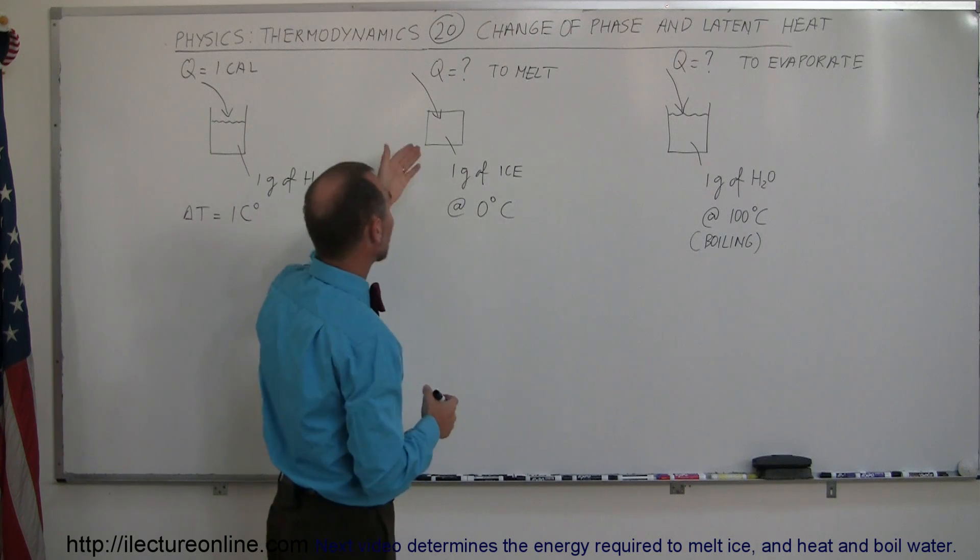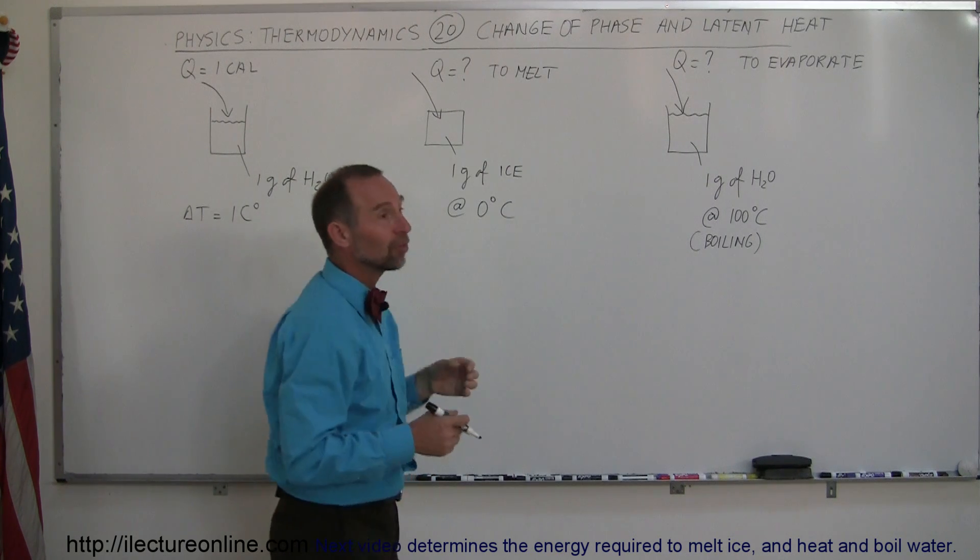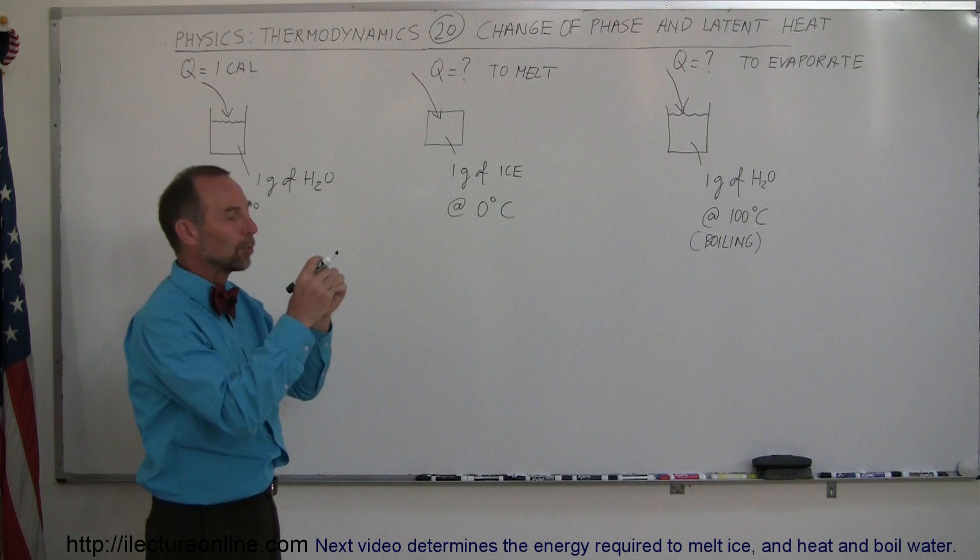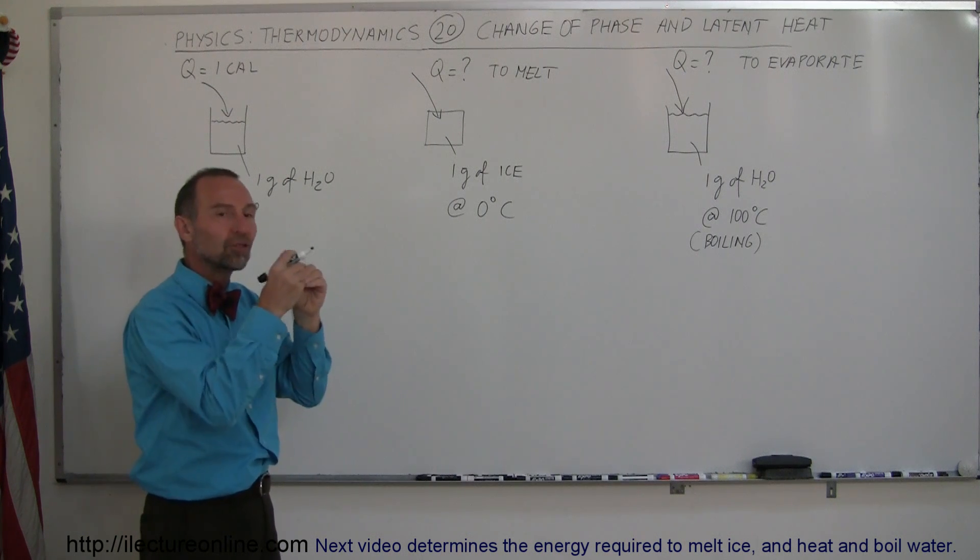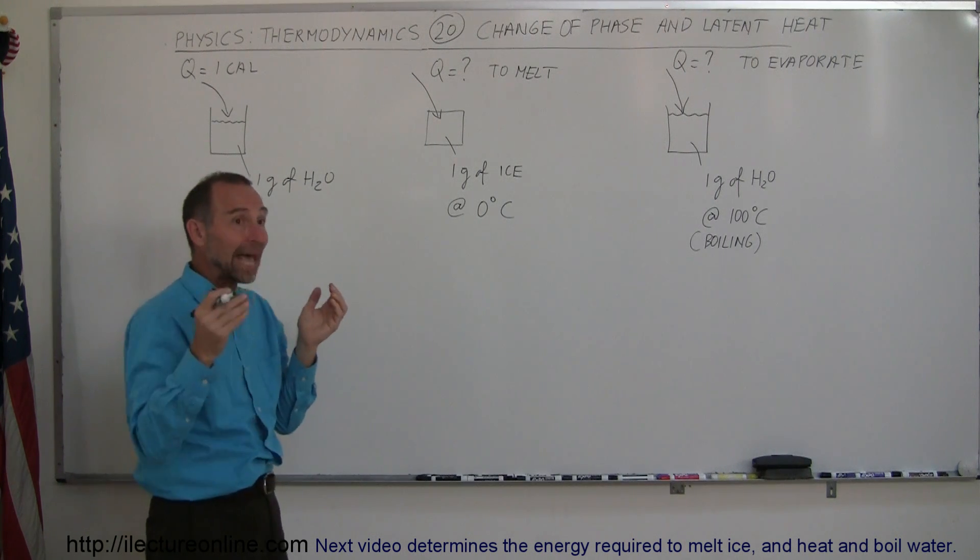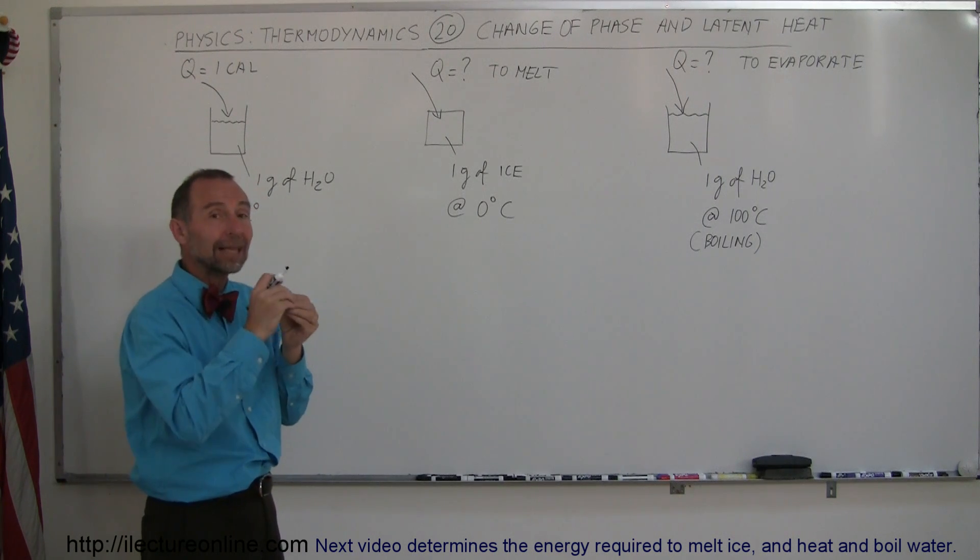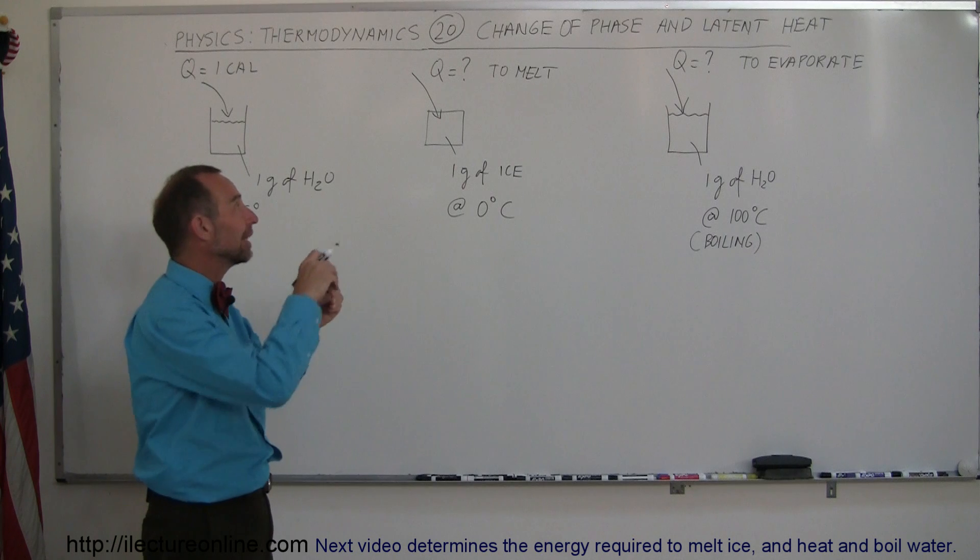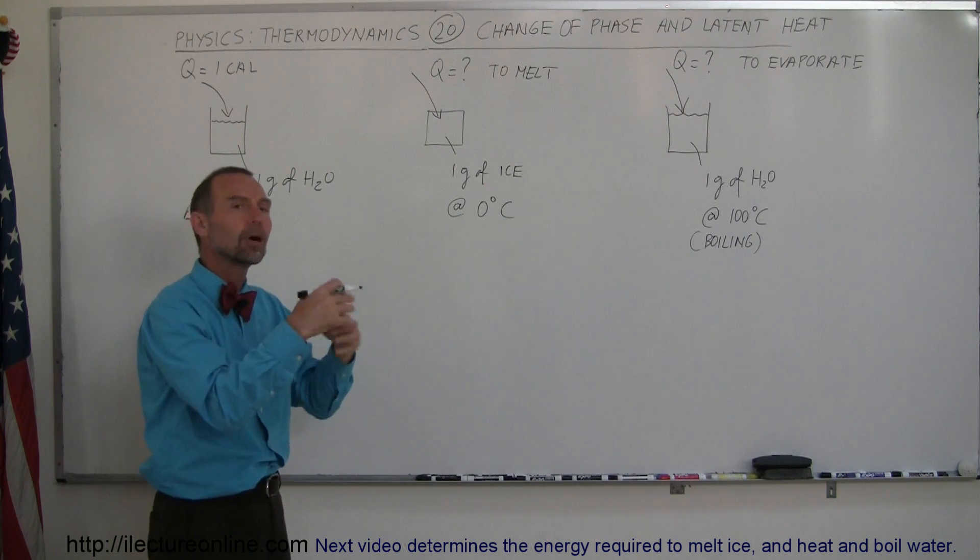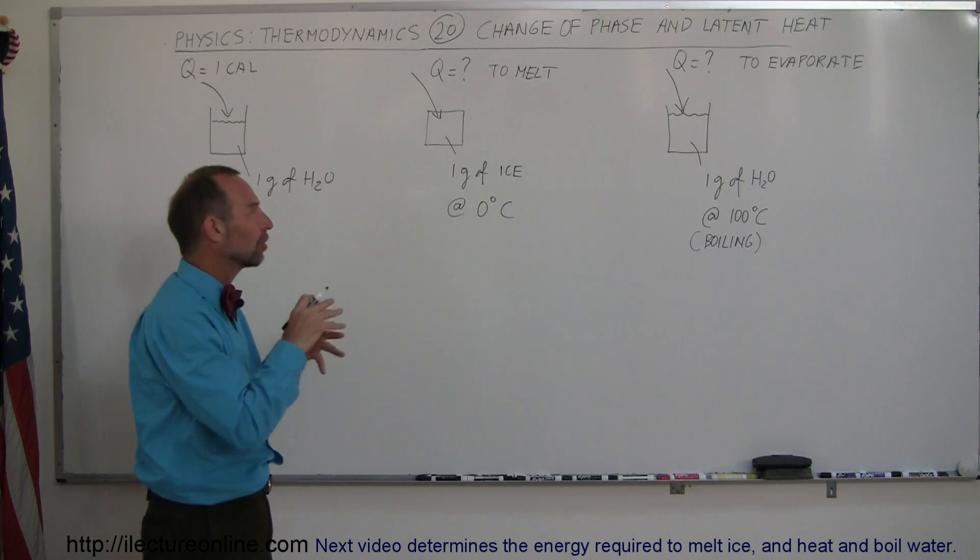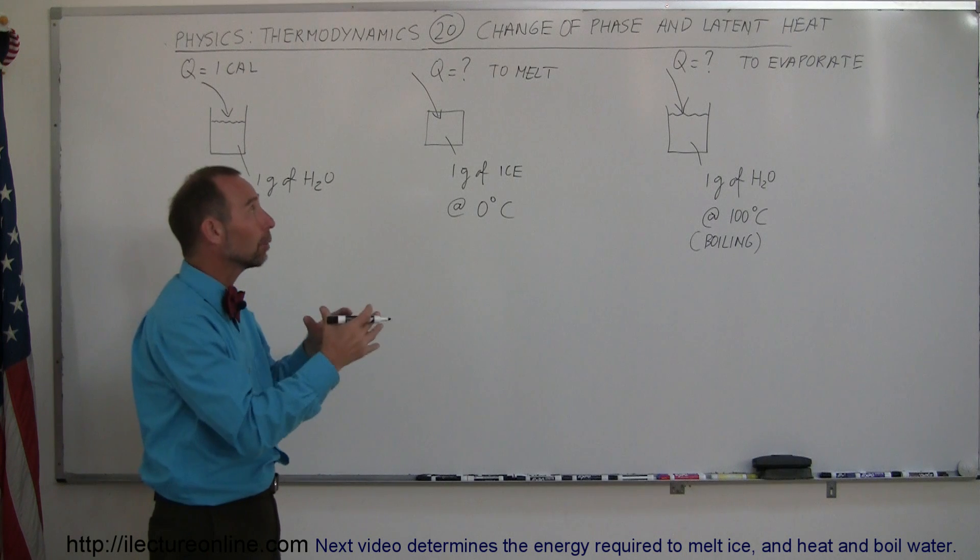To go from solid to liquid, you have to go from a state where atoms are locked in position due to electrical bonds. When you add enough heat, the molecules begin to vibrate so violently they break loose from each other and begin to roll over each other like marbles. You turn a solid into a liquid.